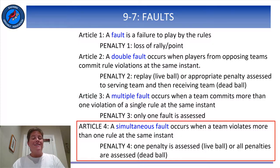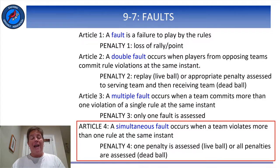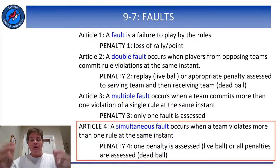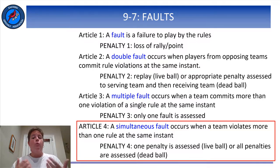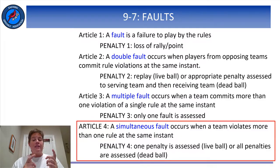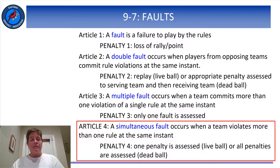A similar rule is the simultaneous fault, in which a team commits violations of more than one rule at the same time. An example might be if a blocker on Team A illegally reaches beyond the net to interfere with the opponent's play on the ball while also contacting the net. No two-point penalties are allowed, so pick one of the two faults and penalize it. However, if the simultaneous faults occur during a dead ball, all penalties are assessed.